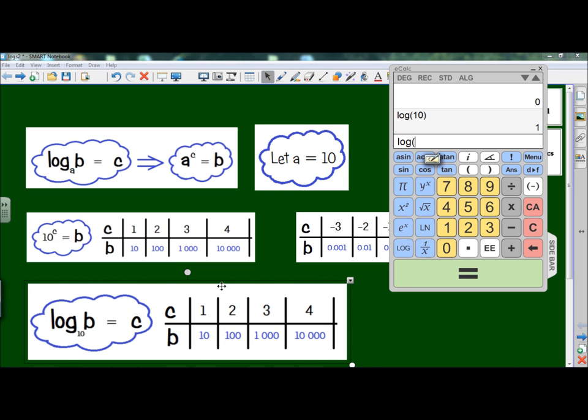And the next one. Log 100 equals 2. So that's fine. What does it mean? It means what is the power of 10 that gives you 100? It's 2. This one says what is the power of 10 that gives you 10,000? It should be 4. Let's just put it in. Log 10,000 equals 4.